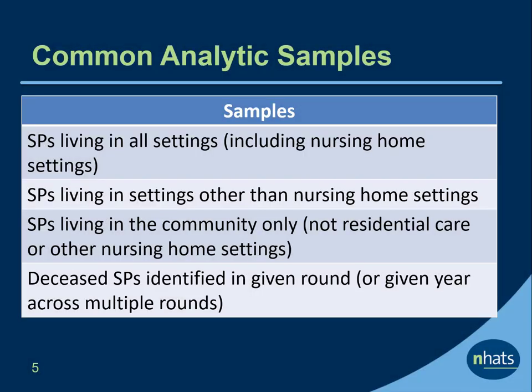Here are four common examples of research topics, each of which requires a different analytic sample. Researchers may be interested in characteristics of SPs living in all settings, including nursing homes. Or they may be interested in characteristics of SPs living in settings other than nursing homes, but including residential care settings. Researchers may be interested in characteristics of SPs living in just the community—that is, not in residential care and not in nursing home settings. Finally, there may be an interest in describing characteristics of sample persons who are identified as deceased in a given round or for a given year—that is, across multiple rounds.